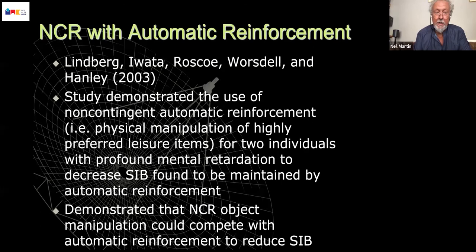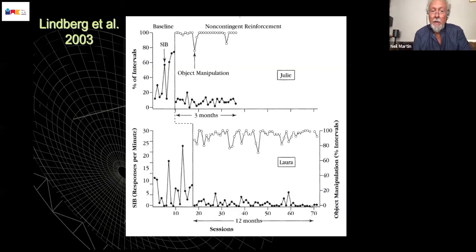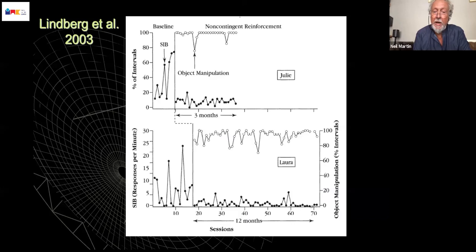Here is what the data look like for two individuals. You have SIB in baseline, which is actually highly variable particularly for the second individual. Then they provide access to the object to manipulate. You see high levels of object manipulation — the open markers that are high in the experimental condition — and self-injurious behaviour drops to much lower levels. Just by giving access to a preferred stimulus that individuals can manipulate — a very, very easy thing to do.